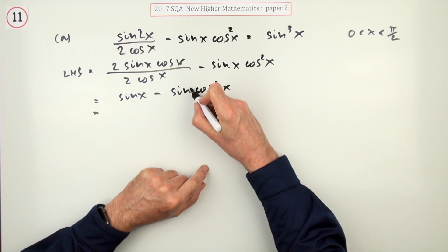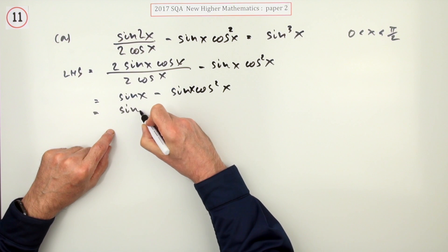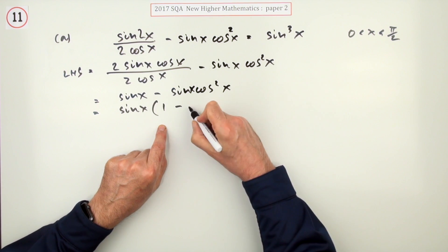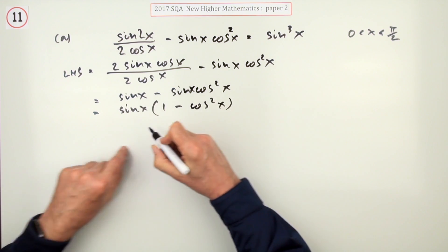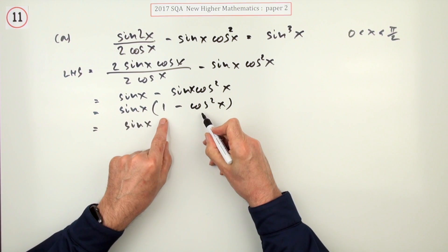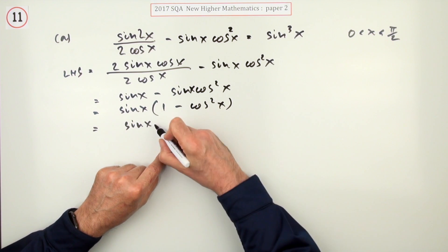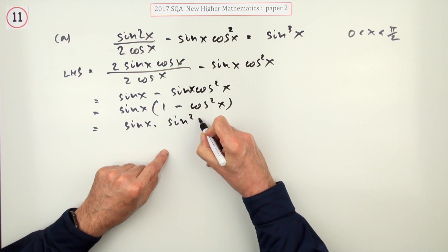Common factor. Don't lose your head. A common factor there of sine x. Take out the sine x, and that leaves you with 1 there and minus cos squared x there. That should ring a bell. Well, sine squared and cos squared makes 1. So, sine squared is 1 minus cos squared. So, that turns into a sine squared.